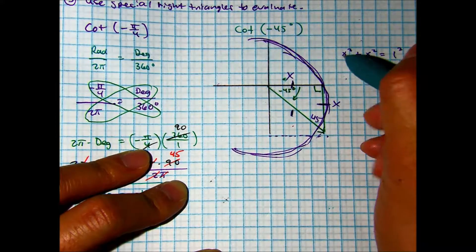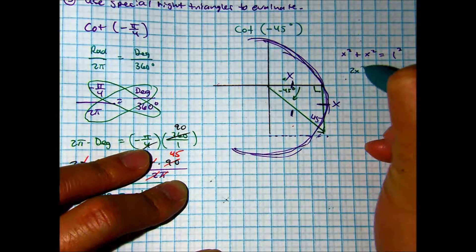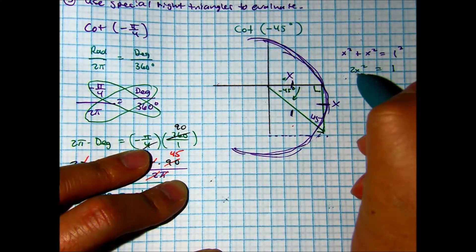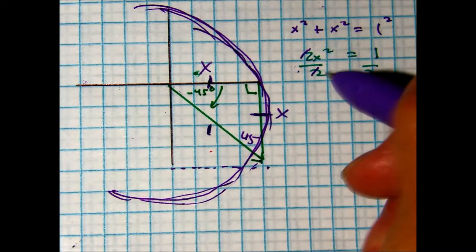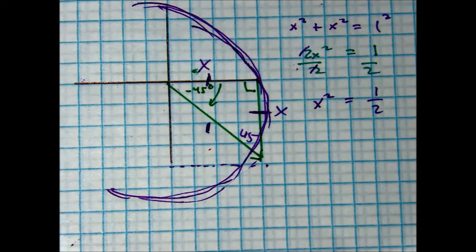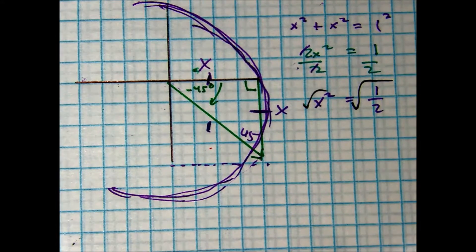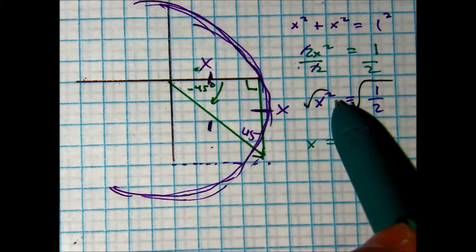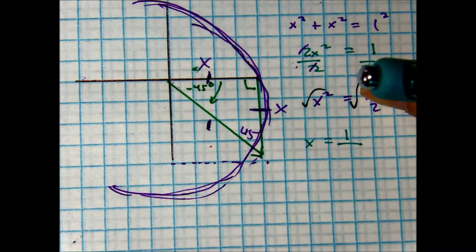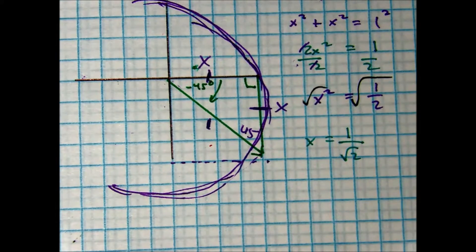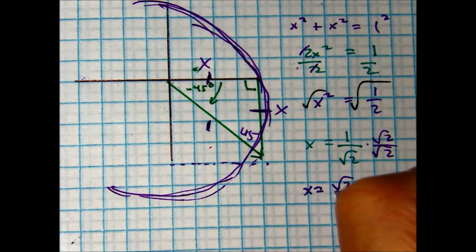Combining like terms gives us 2x squared equals 1. Dividing both sides by 2 gives x squared equals 1 half. To remove the power of 2, I take the square root of both sides. The square root of 1 is 1, and the square root of 2 remains under the radical, so I get 1 over root 2. I can't leave it like that — I have to rationalize — so x equals radical 2 over 2.